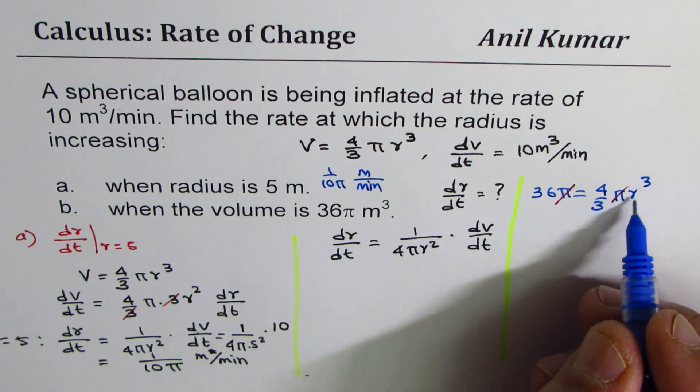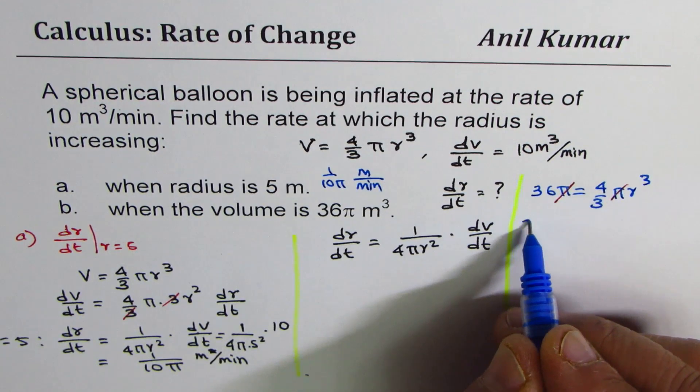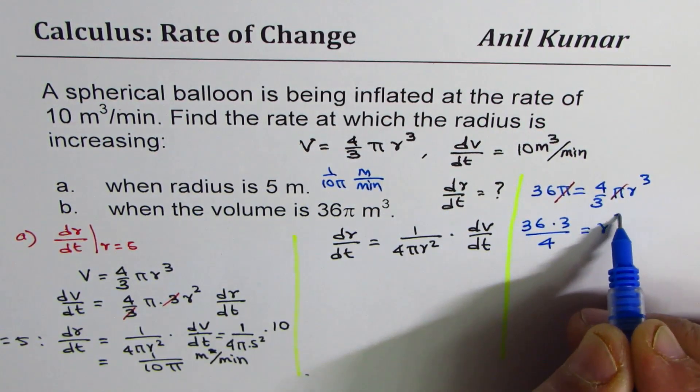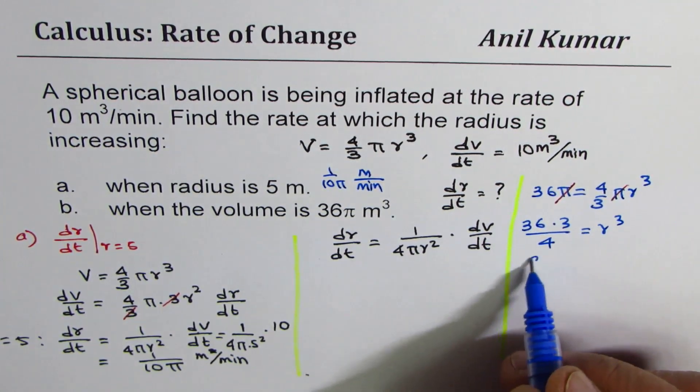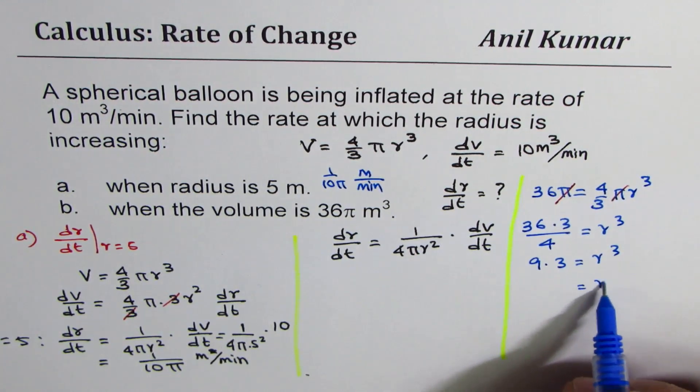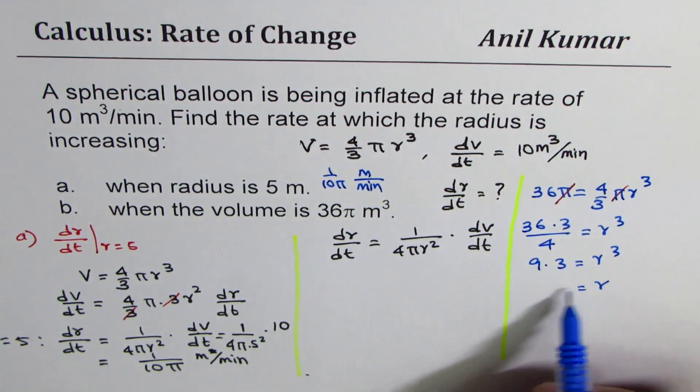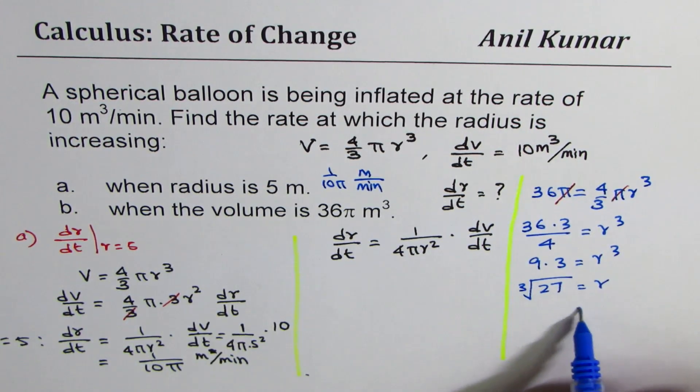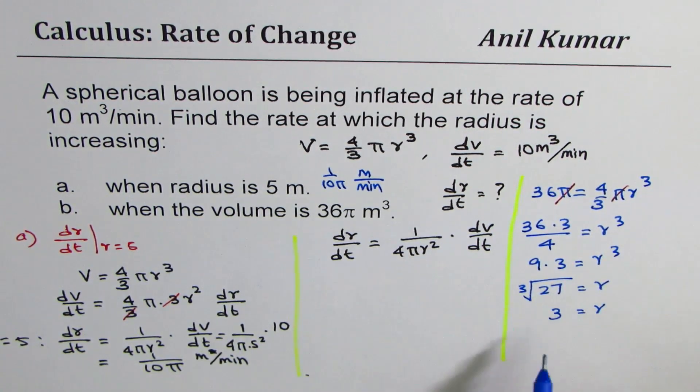So r cube is equals to 36 times 3 divided by 4 is r cube. So that gives you 9 times 3 equals to r cube or r is equals to, this is 27 cube root. 27 cube root. So we get r as equals to 3. So let's substitute r as 3 here.